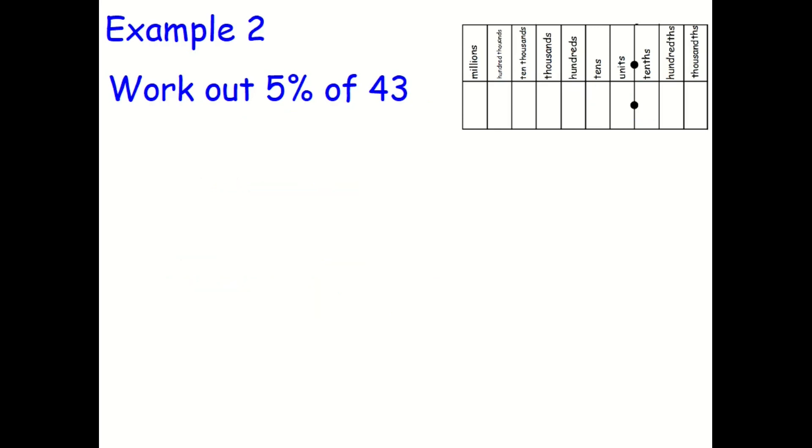Example number 2. Work out 5% of 43. So again, you can do 0.05 multiplied by 43. Or you can think about 10% to start off with. So 10% of 43. Use the place value grid. 43 is here. If I'm jumping all digits one column to the right, I get 4.3. So 4.3 is my 10%. And if I'm finding 5%, I just need to divide my 4.3 by 2. So 4.3 divided by 2 is 2.15. So 2.15 is 5% of 43.